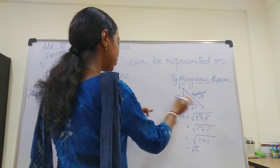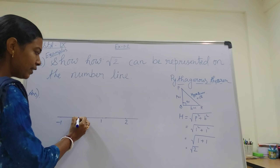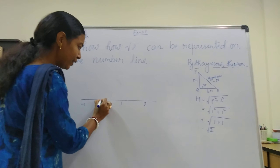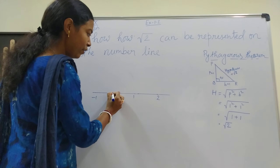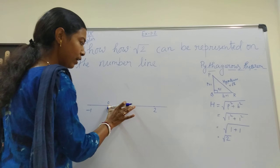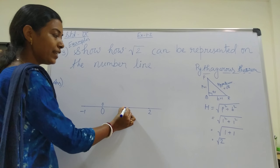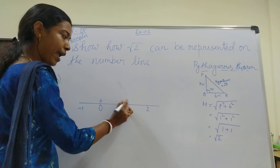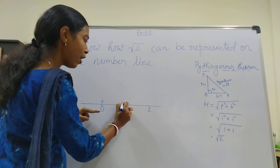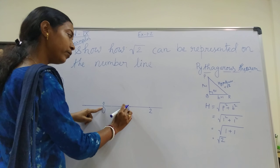Now I will show this on the number line. This is the number line. This is the midpoint, that is 0 — give its name O. At position 1, give its name A. From O to A is 1 unit: OA = 1 unit.